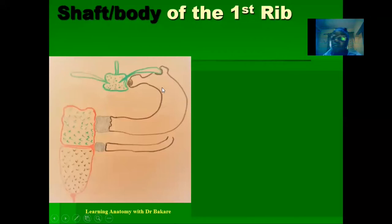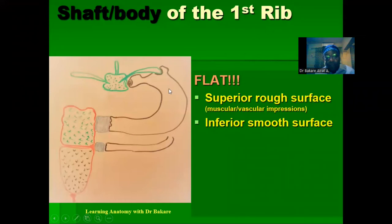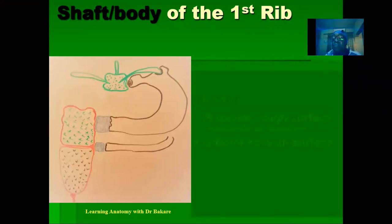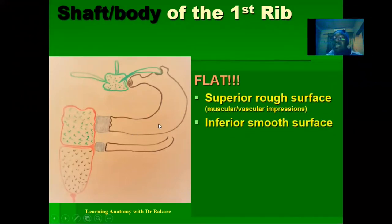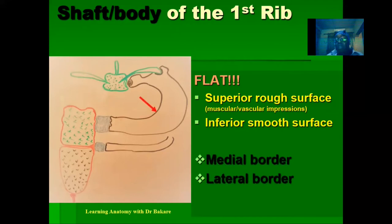We also have the shaft or body, which is the longest region, running from the tubercle to the sternal end. The shaft of the first rib is flat — the flat presentation is along the horizontal plane — and because it is flat, it presents a superior surface and an inferior surface. The superior surface tends to be rough because of impressions created by vessels and muscles, while the inferior surface is smooth because structures are not really passing through it. It is also seen with a medial and a lateral border.